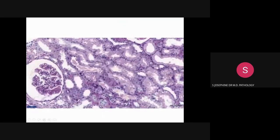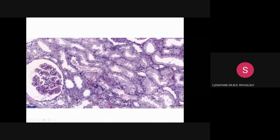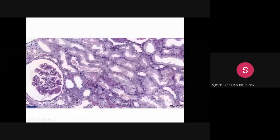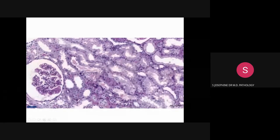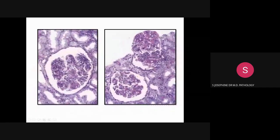This is a section from the PAS stain slide. In the glomeruli, we can see the characteristic capillary wall thickening highlighted by the PAS stain, which stains the glomerular basement membrane, showing characteristic thickening and wire looping. In the adjacent tubules, we can see RBC casts, which are PAS negative. These images again show the characteristic glomerular basement membrane thickening and wire loop lesions, well highlighted by the PAS stain.